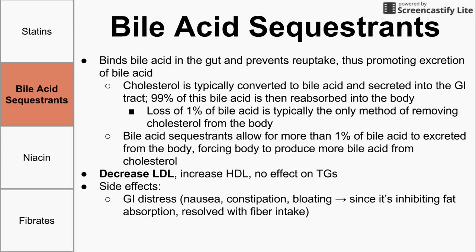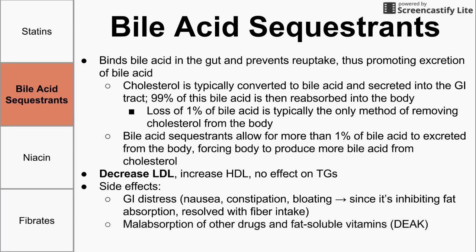One major solution to these GI effects is to increase fiber intake. Bile acid sequestrants can also cause malabsorption of other drugs, mostly lipid-soluble drugs and fat-soluble vitamins. This makes sense because bile is used to emulsify fats and aid in their absorption. If you have a sequestrant of bile acid, you're going to be less able to absorb fatty molecules. So the fat-soluble vitamins — vitamins D, E, A, and K — will not be absorbed as easily for someone taking bile acid sequestrants.